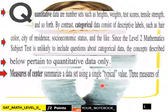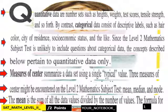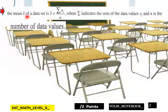Such as measures of center. Summarize a data set using a single typical value. Three measures of center might be encountered on the level 2 mathematics subject tests, which are mean, median, and mode. The mean is the sum of all the data values divided by the number of data values. The formula for the mean of a data set is mean equals the summation of xi over n, where the summation indicates the sum of the data values xi, and n is number of data values.